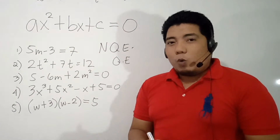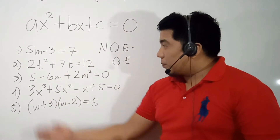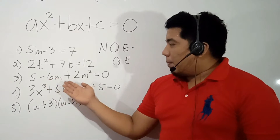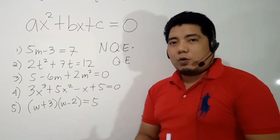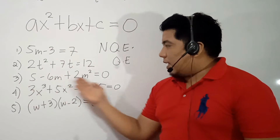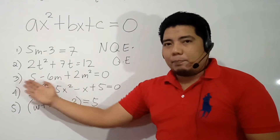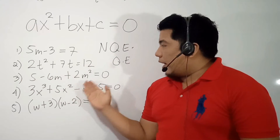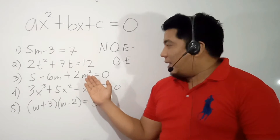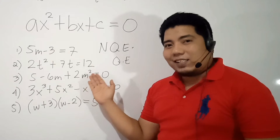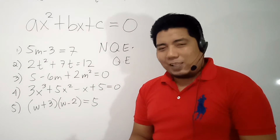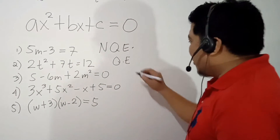Next, Number 3: 5 minus 6m plus 2m squared is equal to 0. As we can see, our m has an exponent of 2 and it is the highest degree. Therefore, this is still considered a quadratic equation.